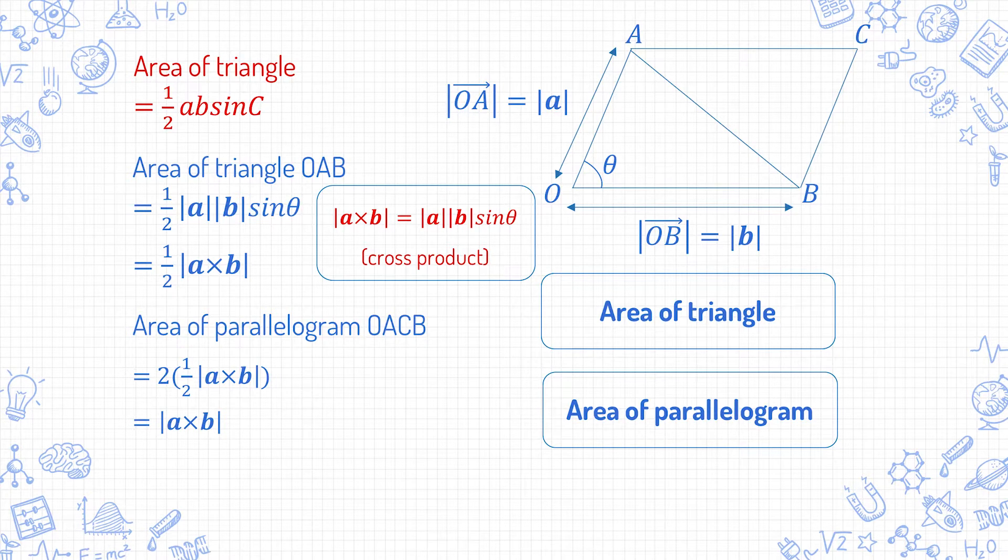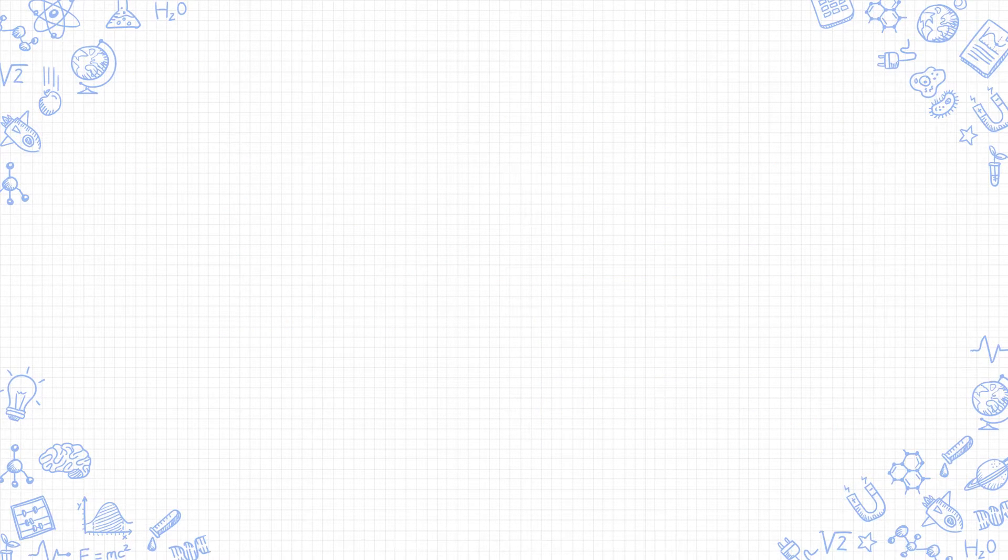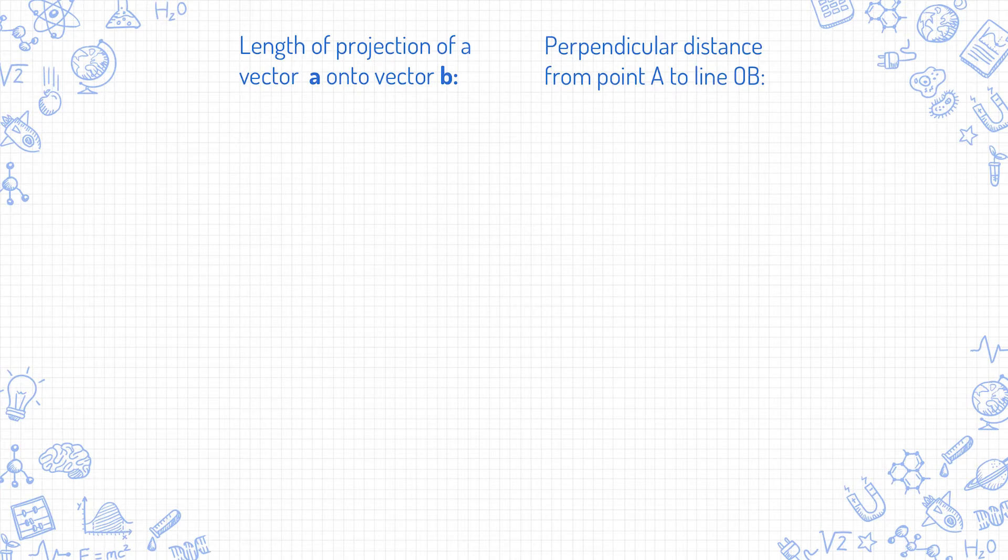This is how you find the area of the triangle and area of parallelogram using the cross product. If you've made it this far, you can probably keep on going to the last two results for today: length of projection and perpendicular distance.